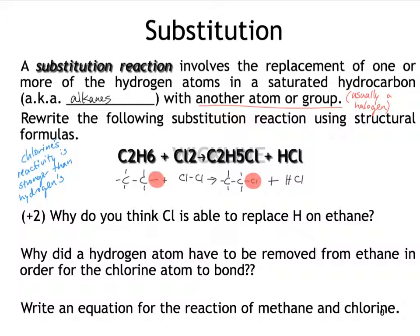And only in that way is it able to achieve that substitution. So why is chlorine able to replace hydrogen on ethane? Again, it's because of activity or reactivity.